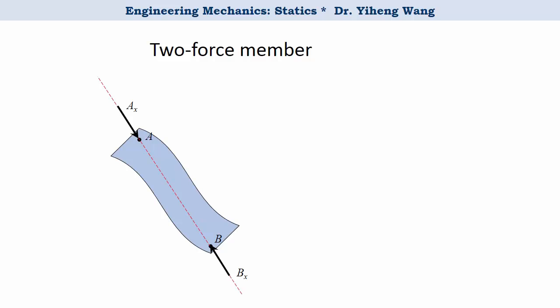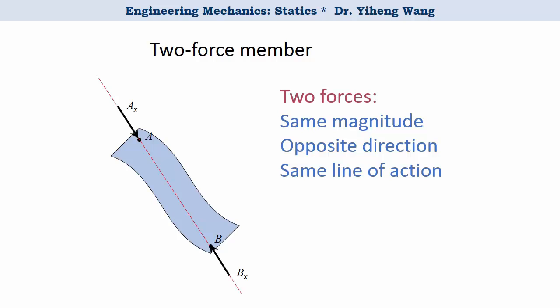So if a member only has forces acting on two points, it is called a two-force member, and the two forces will have the same magnitude, opposite direction, and same line of action, which is simply the line connecting the two points.